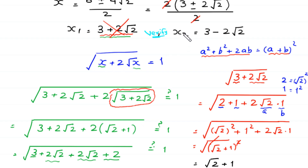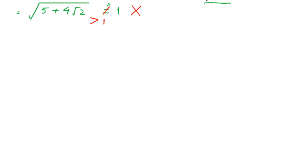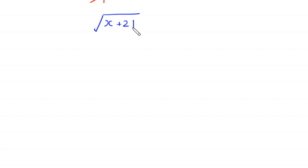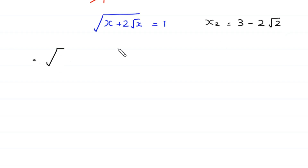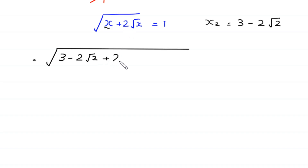Now in the original equation we substitute the value x₂ equals 3 minus 2√2. The original equation is square root of x plus 2 times square root of x equals 1. We write: square root of (3 minus 2√2) plus 2 times square root of (3 minus 2√2), and check whether this equals 1.